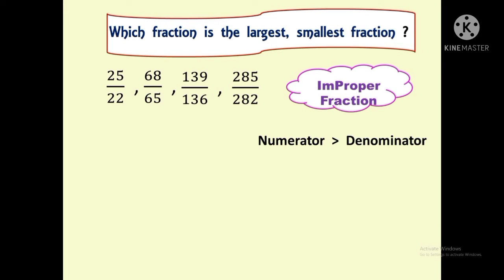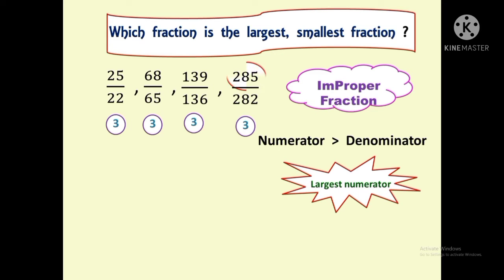For the first fraction, the difference between the numerator and the denominator is 3. Similarly, for all the remaining fractions the difference is also 3. So for this trick, if the fraction is improper and the difference between the numerator and denominator is the same, we have to find the largest numerator among these fractions. The largest numerator is 285, so the largest numerator corresponds to the smallest fraction — the smallest fraction is 285 by 282.